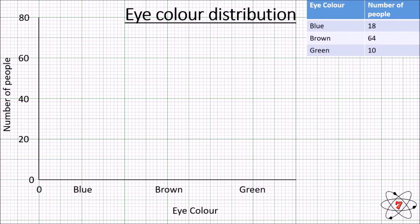And along the side, we have the number of people. This is our dependent variable. And again, we have numbers 20, 40, 60, 80. The reason why we've chosen 80 as our highest number is because if we look at our data, 64 is the most we have. So, we want to have our highest number on our graph, slightly larger than our highest data value.